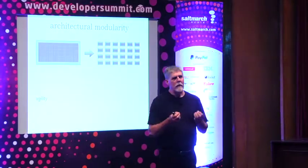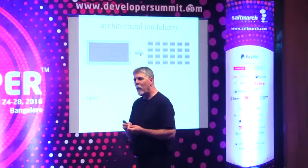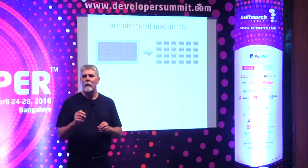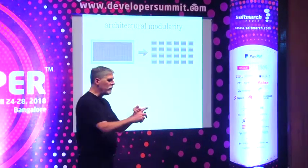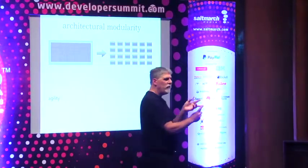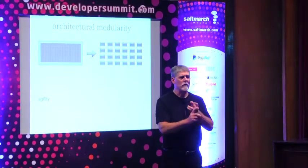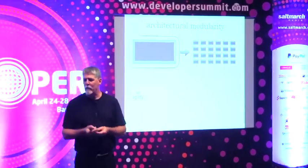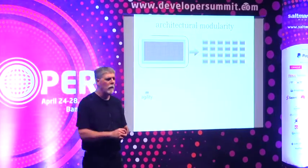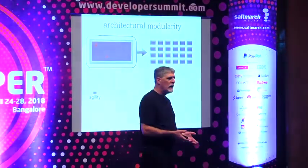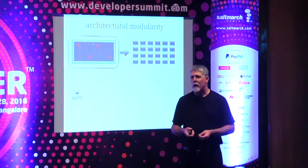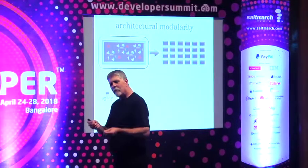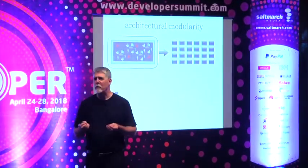Let's investigate those drivers. The very first driver in this move to modularity — why companies are so interested — is agility. I'm going to define agility as the ability to respond quickly to change. In other words, how fast can your applications respond to changes in technology? And more importantly, changes in business — the way the business is changing. Well, the problem is this: with monoliths, we have fairly low levels of agility. That rating is very low. Why? Because changes that we make are all combined together, and the coordination needed of multiple teams is significant.